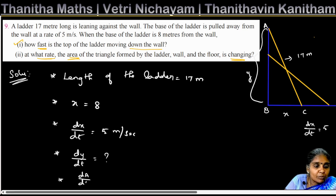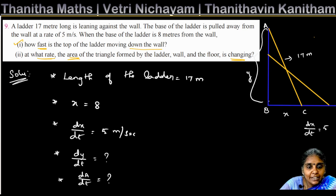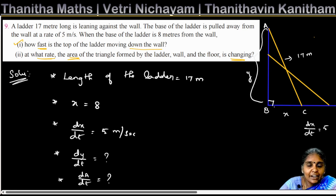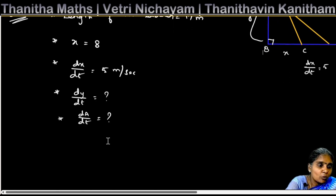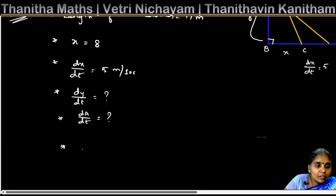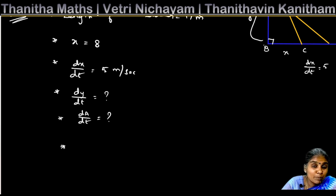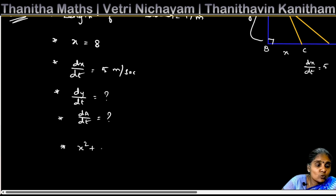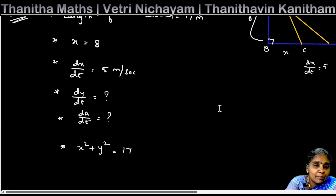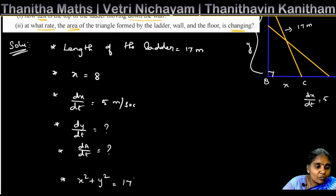The triangle is a right angle triangle, so we will use the Pythagorean theorem. The opposite square plus adjacent square equals hypotenuse square. That gives us: x² plus y² equals 17², which is 289.